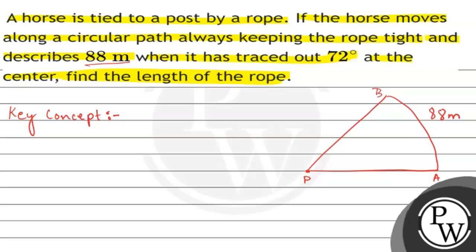And also we have the angle APB that is 72 degrees. So in the question we are letting the rope length be r meters.